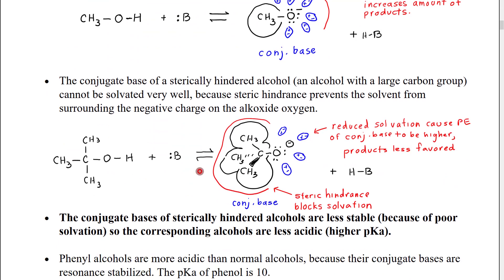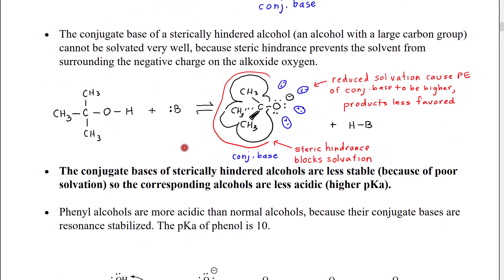When we go to a larger carbon group, then, like t-butyl, what we see is that the t-butyl is significantly larger. I've sort of tried to sketch out the relative outlines on my two pictures.